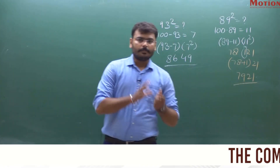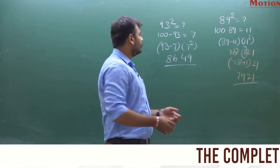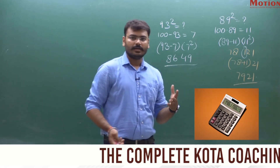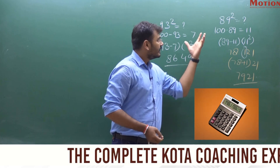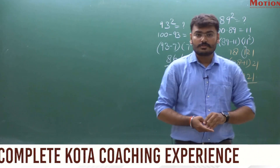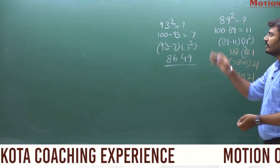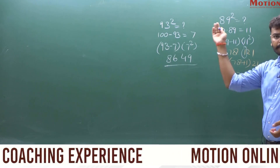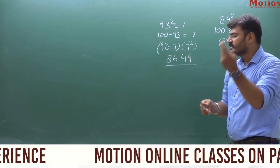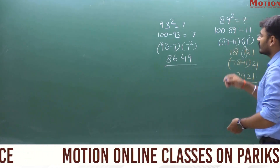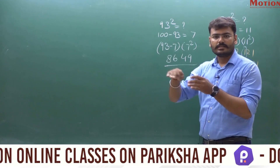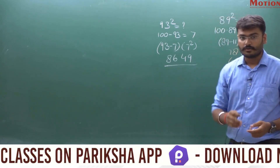Hello everyone. Let's suppose that we need to find the square of two numbers: 93 squared and 89 squared. We all know how difficult it is to find 93 squared. One way is 93 into 93. A second method is to write it as (100 minus 7) whole squared.